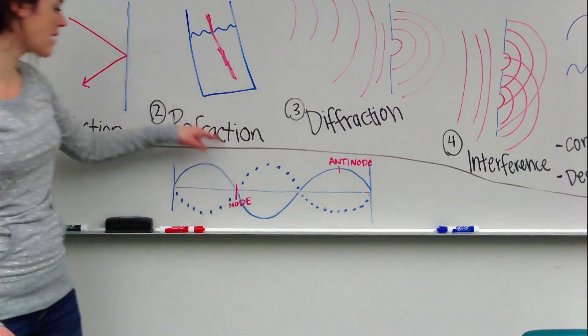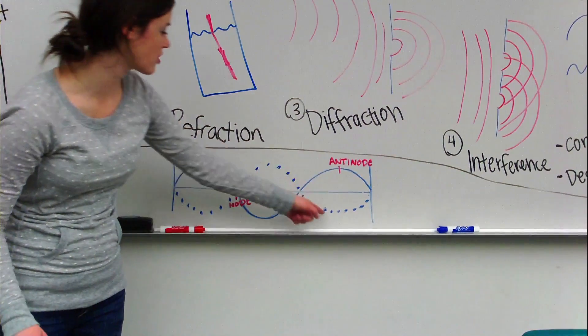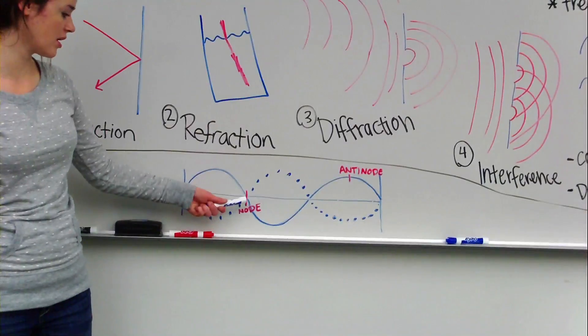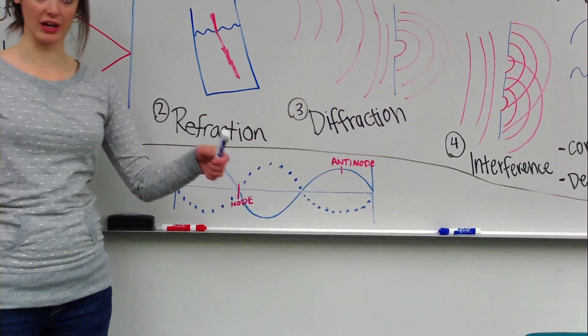it travels right back on itself. So, there's no wave traveling through these dotted lines. Anti-nodes are the parts where the wave does travel. Nodes are the part where you don't see it moving at all.